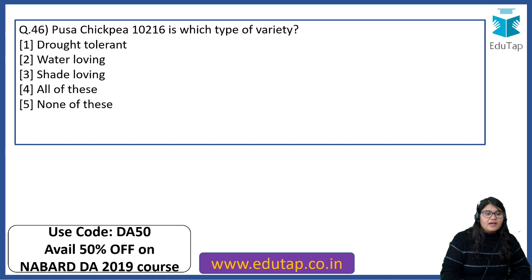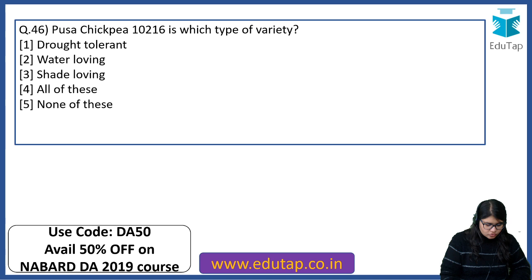Pusa Chickpea 10216 — what type of variety is this? These kind of questions are very easy to do, so just memorize them then and there. The answer is drought tolerant.